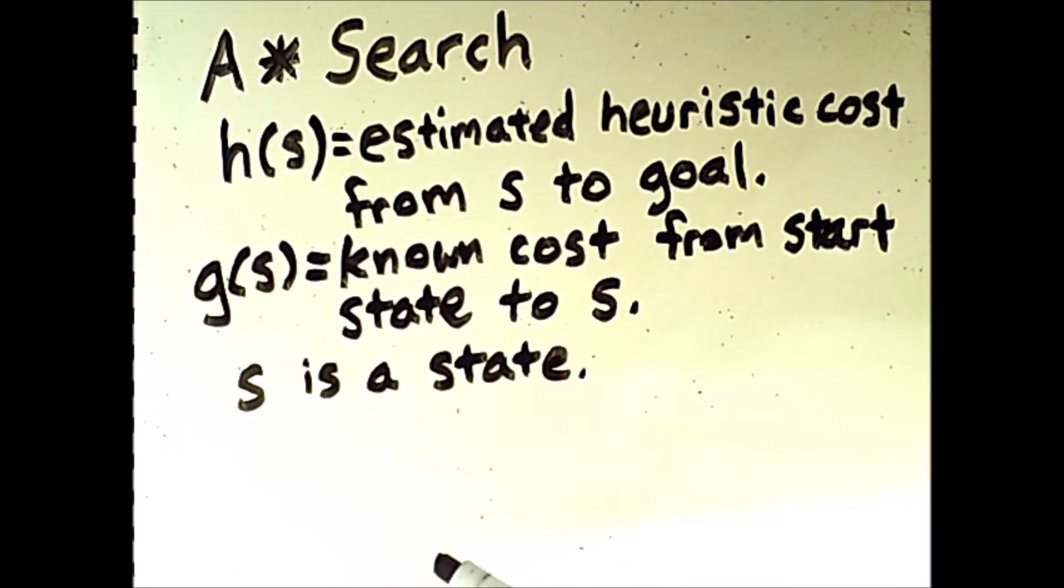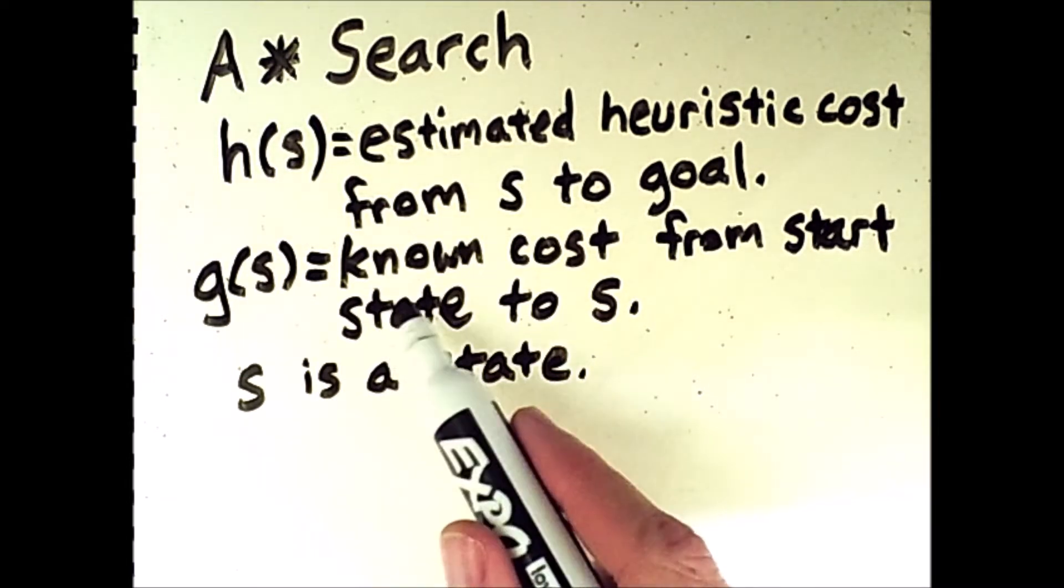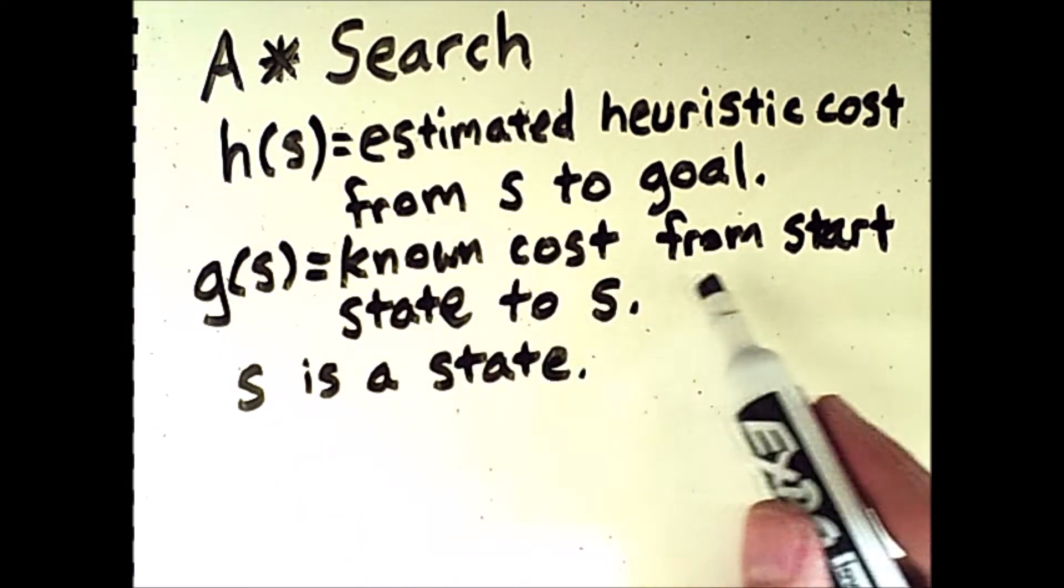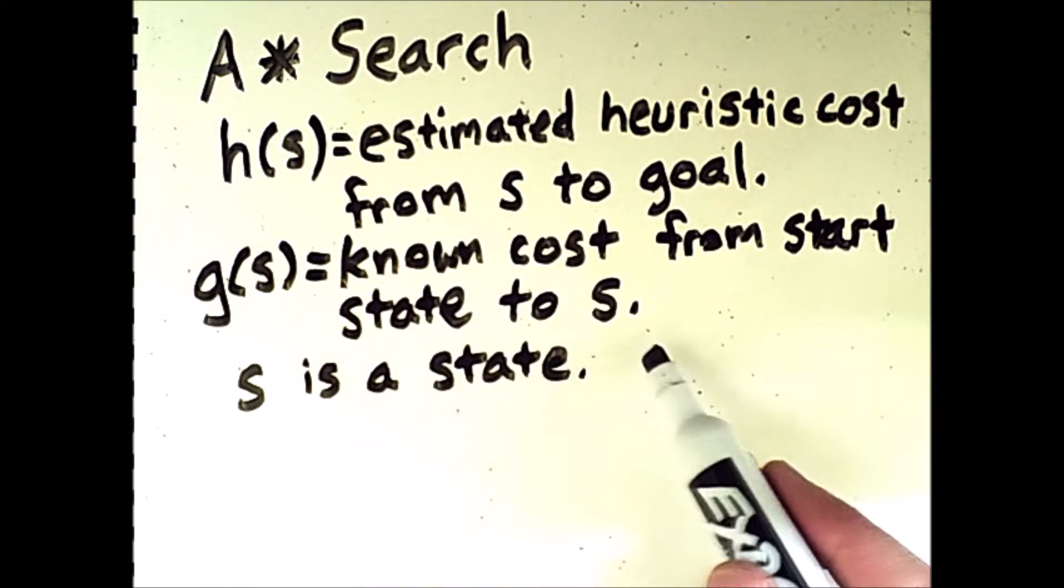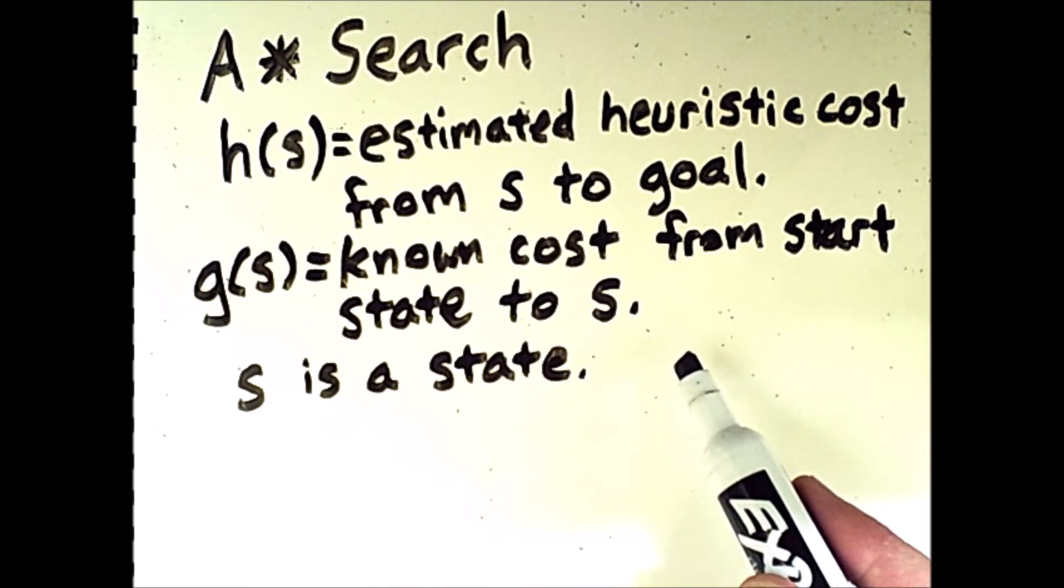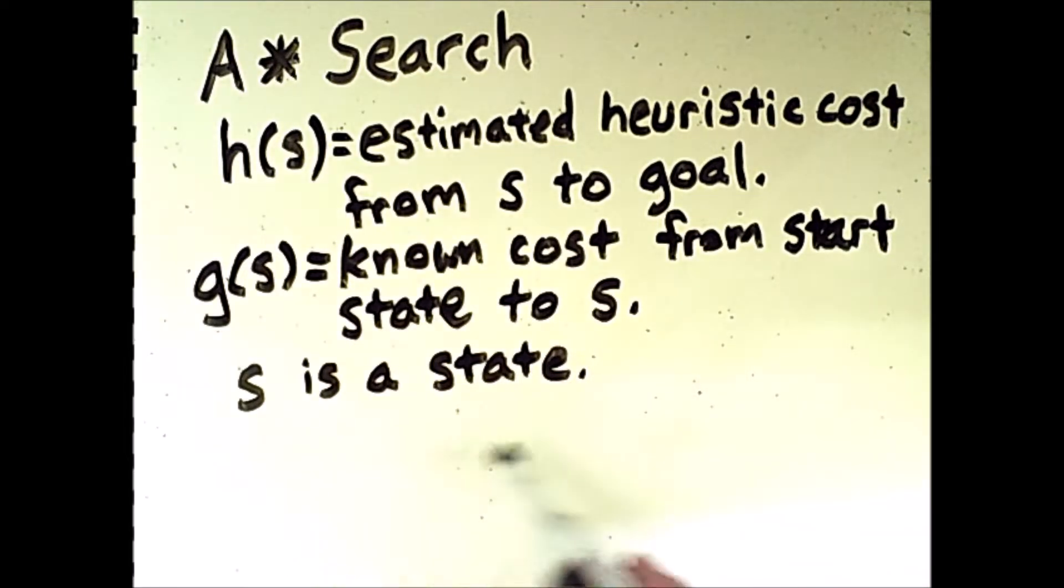I'm also going to introduce another function g, which also takes a state as input, and we're going to define this as the known actual cost from the start state to s. So once we're traversing a graph, we know how much it costs to get there from the start state.